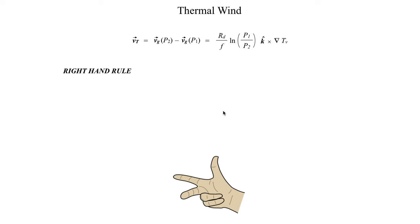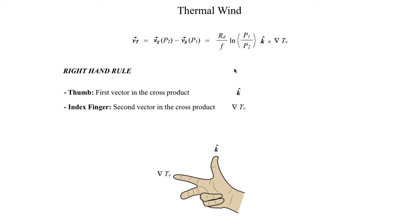Since we have a cross product, we can make use of the right-hand rule — the same idea we used when deriving the geostrophic wind. Our thumb represents the first vector in the cross product, which is k-hat pointing vertically upward. Our index finger represents the second vector, the horizontal temperature gradient ∇T_v. And the middle finger, the result of the cross product, gives our thermal wind vector. So we use the right-hand rule to quickly evaluate the direction the thermal wind vector points, or equivalently, the direction of the horizontal temperature gradient.